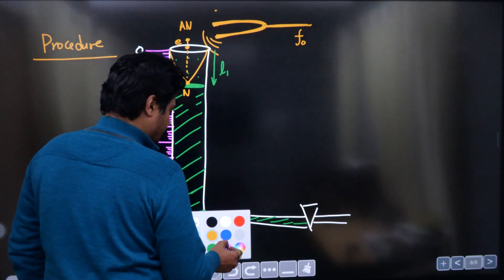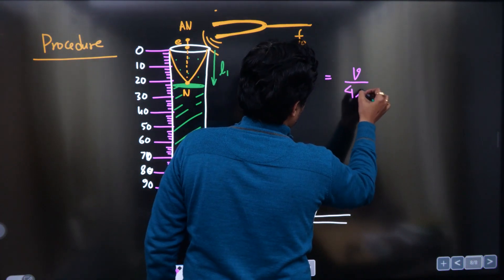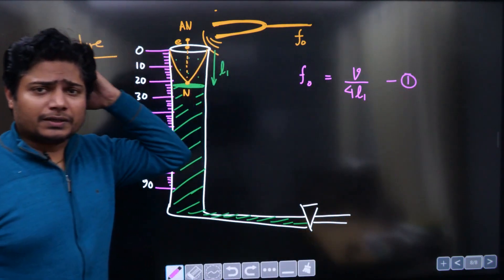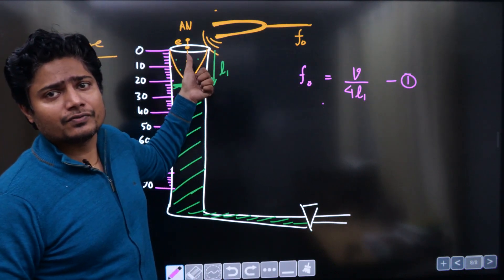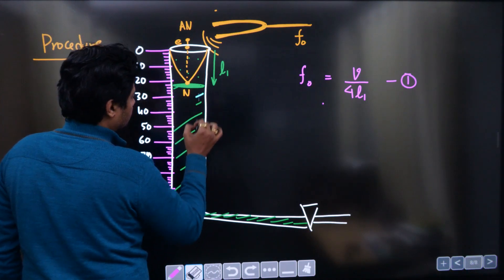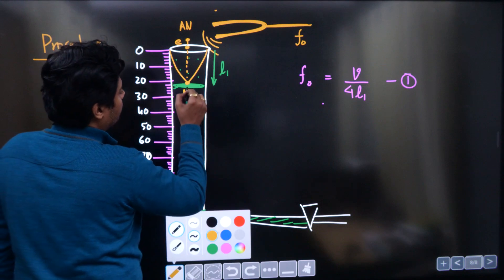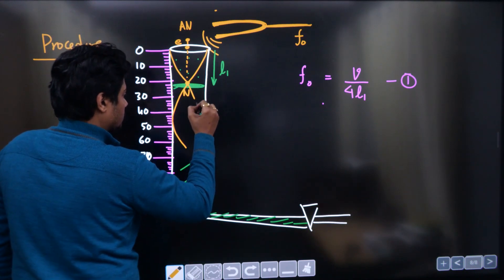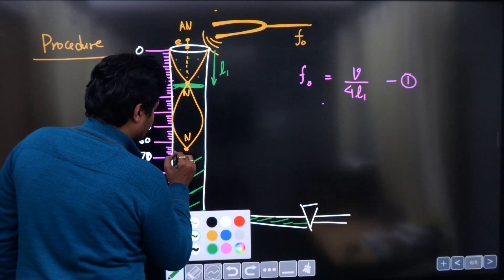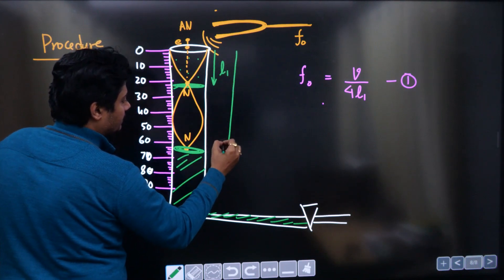The anti-node is slightly above the length of the pipe column — this extra distance is called end error 'e'. This is the fundamental mode. In a closed pipe, the fundamental mode f₀ is given as v / 4l. But if you directly put the value of l₁, the end error will come in, which you don't know. To eliminate that error, you remove more water and get a resonance again when the second node vibrates. At some other level, let the measurement be l₂.